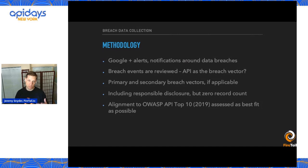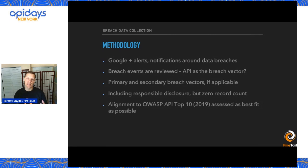A lot of security researchers rightly assumed that there would be a lot of vulnerabilities and possible compromises that would happen as a result. In our own data tracker, we do include responsible disclosures, but we attribute a zero record count to them, unless a specific volume of data was actually gained through the responsible disclosure research.